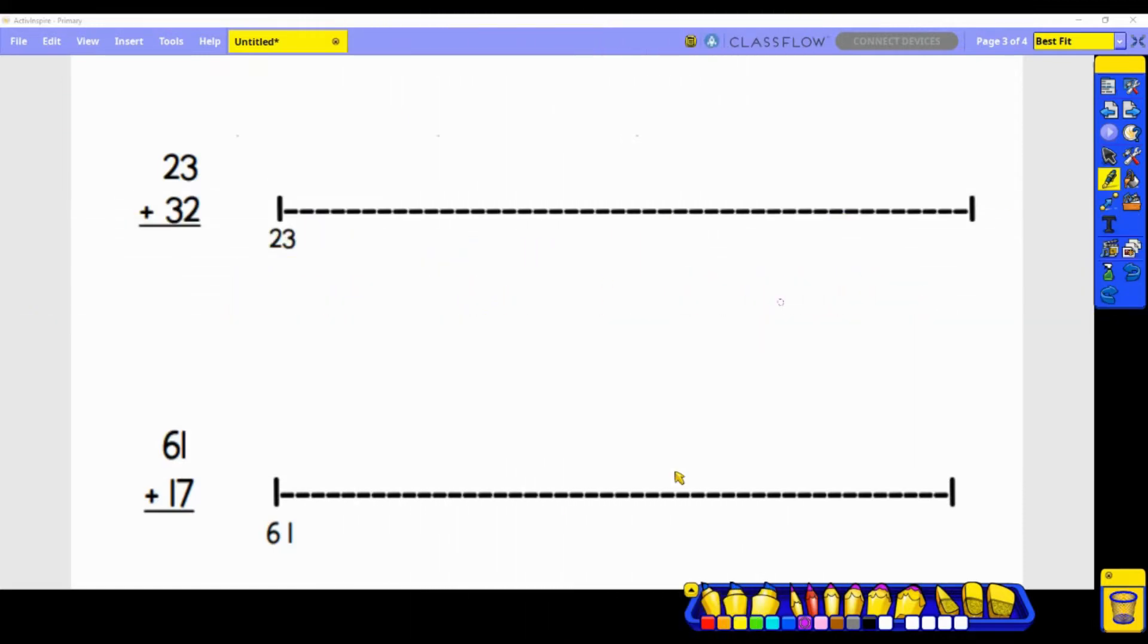Alright, we are going to start with adding using an open number line. We'll start with 23 plus 32. We can see that our top addend is 23 and the 23 has already been added to the open number line.